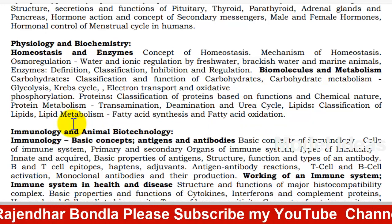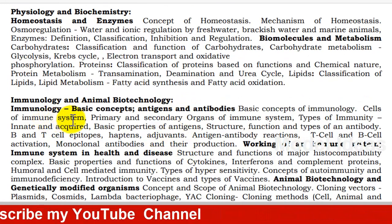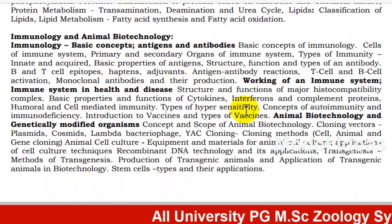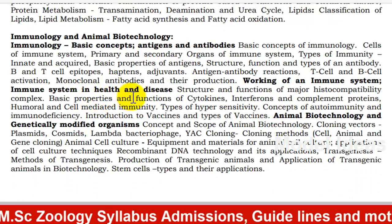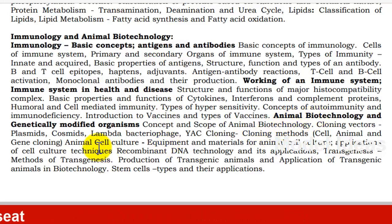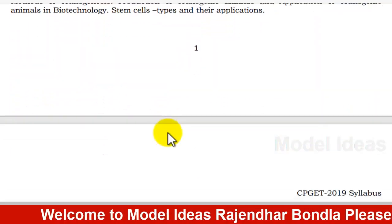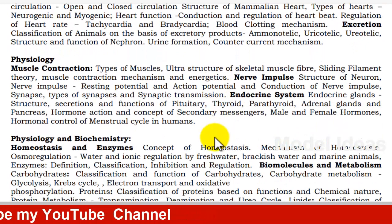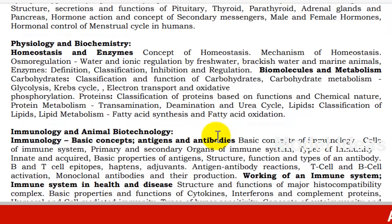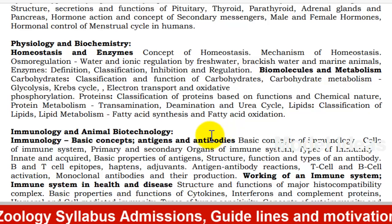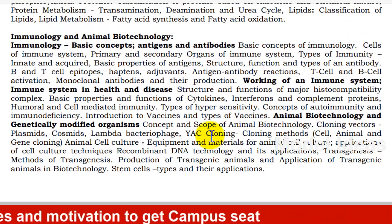Next is Immunology and Animal Biotechnology. Topics include: immunology basic concepts, antigens and antibodies, immune system, immune system in health and disease, animal biotechnology, and genetically modified organisms. These subtopics give you 40 marks from Part A. The reference materials are degree first, second, and third year textbooks, and VGS model papers.